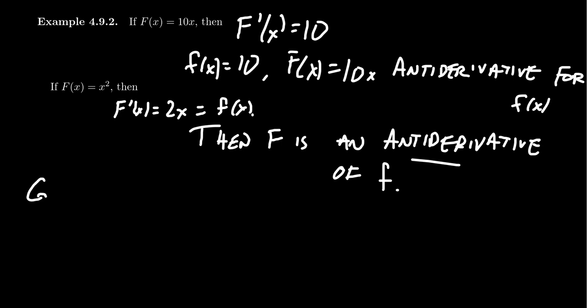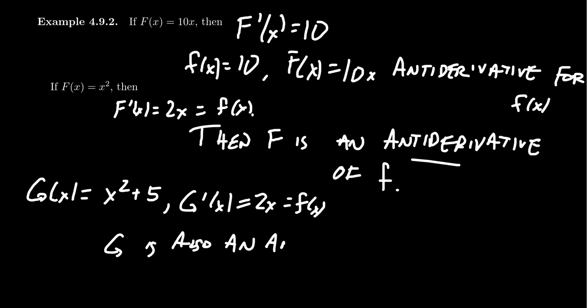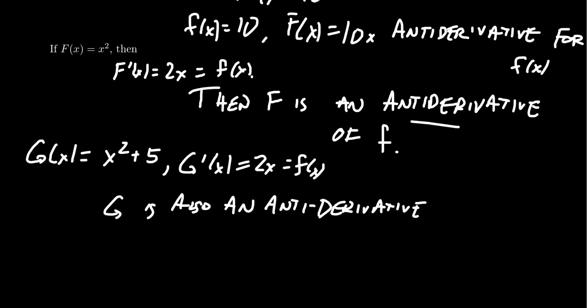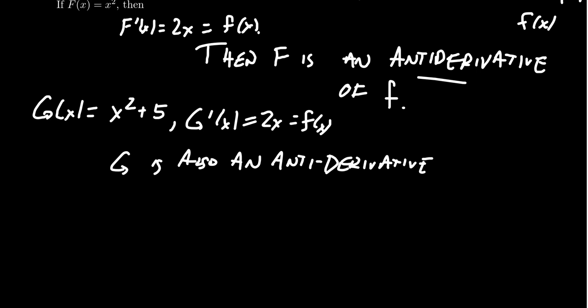But I want to make mention, though, if we take a different function, g of x equals x squared plus 5. This function, g of x, also has the relationship that its derivative is equal to 2x, which is little f of x. So this shows us that g is also an anti-derivative. Huh, that's interesting. I wonder if I could look at another one, or if I could find another one. Well, let's look at the time right now. Now, according to my watch, it is 803 right now.